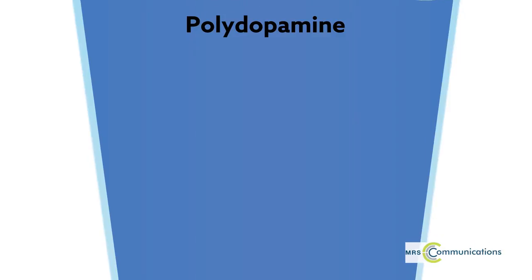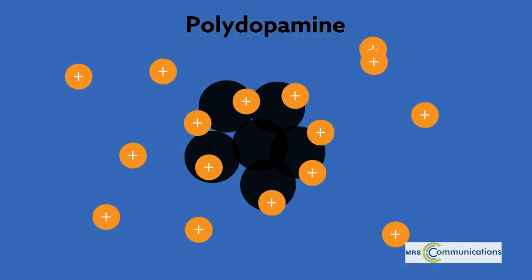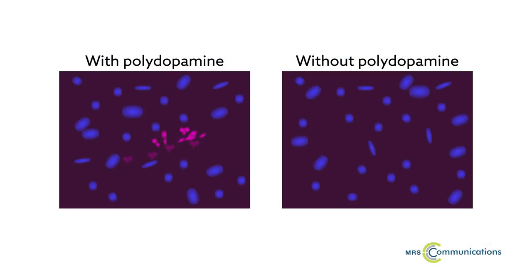Polydopamine, a synthetic melanin analogue, has been used to extract harmful metal ions from water. And polydopamine-coated nanoparticles have been shown to boost the sensitivity of tests designed to seek out diseases like HIV, Zika and cancer.